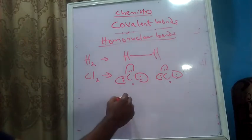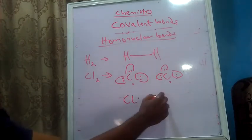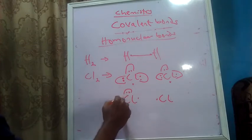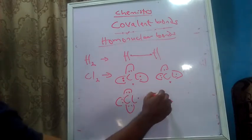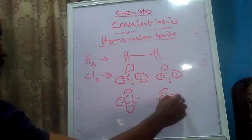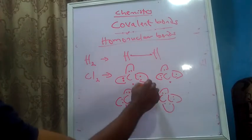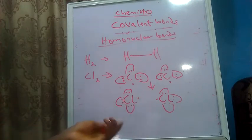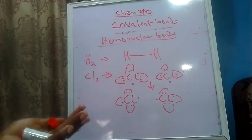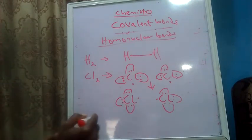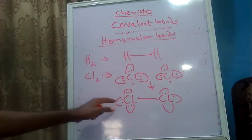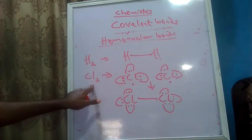If I rearrange this, I am only rearranging the representation. For these two unpaired electrons, to achieve stability they have to come together to form a bond. At the end of the day, we have this single bond holding — that is how Cl2 is formed.